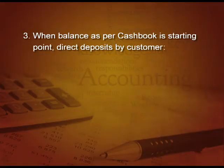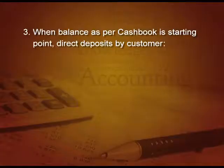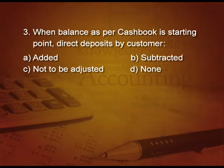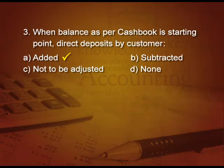Next one: when balance as per cash book is the starting point, direct deposits by the customer are A) added, B) subtracted, C) not to be adjusted, or D) none of these. If somebody has directly deposited in the bank, it increases the pass book, so now we will add. Answer is A — added.